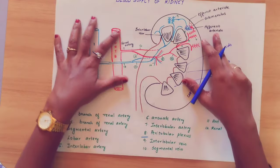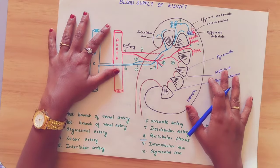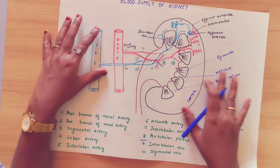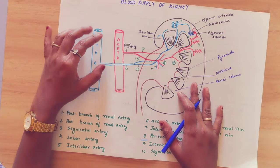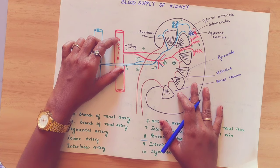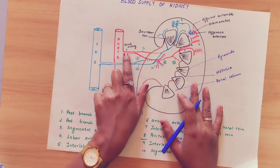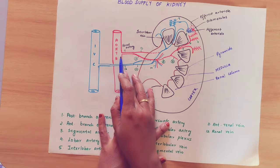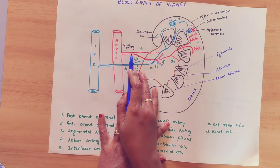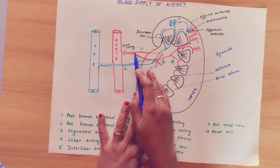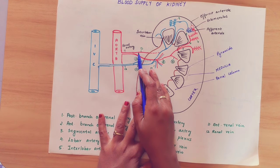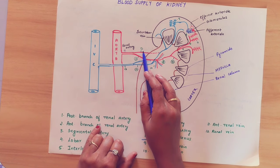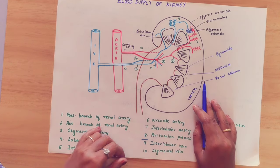This is all about the internal features of the kidney. Now, the blood supply of the kidney begins from the aorta. There is a branch called the renal artery. The renal artery divides into the posterior renal artery and the anterior renal artery.